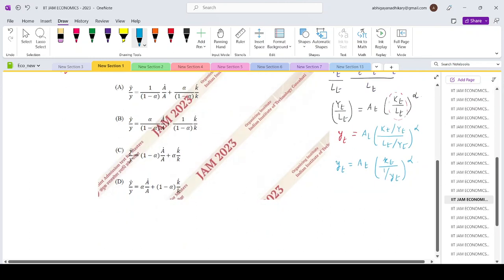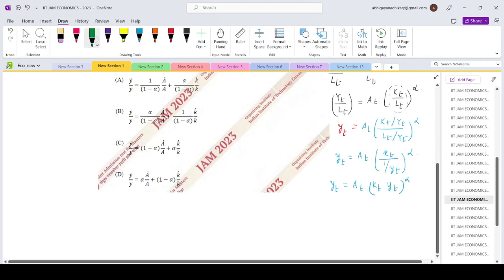This is making Yt equals A t Kt into Yt to the power alpha. So if you take the Yt on the left, Yt to the power 1 minus alpha equals A t small Kt to the power alpha.